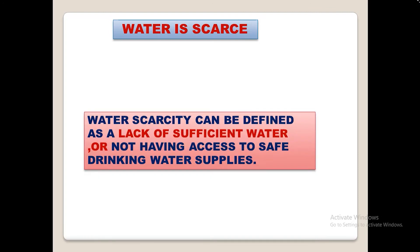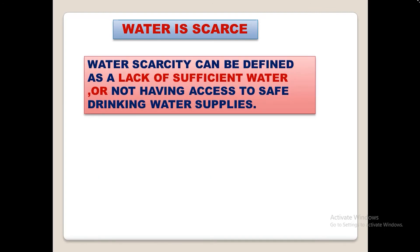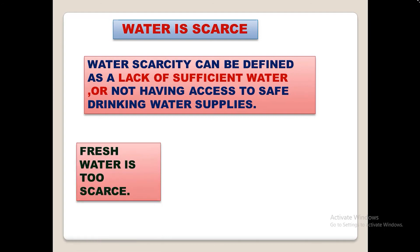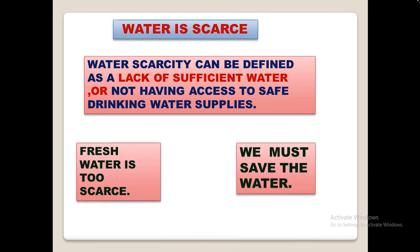Water is scarce. Water scarcity can be defined as a lack of sufficient water or not having access to safe drinking water supplies. Most of the water is present in oceans and seas, but we cannot use sea water as it is too salty. It is therefore very necessary — compulsory — that we save water. Fresh water is too scarce, so we must save water.